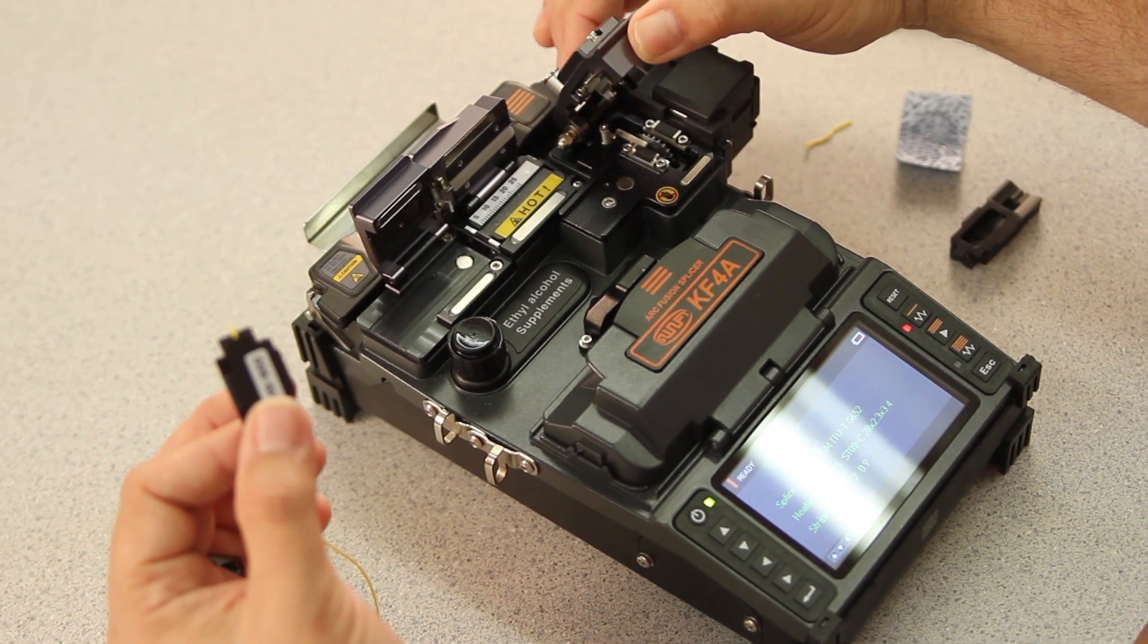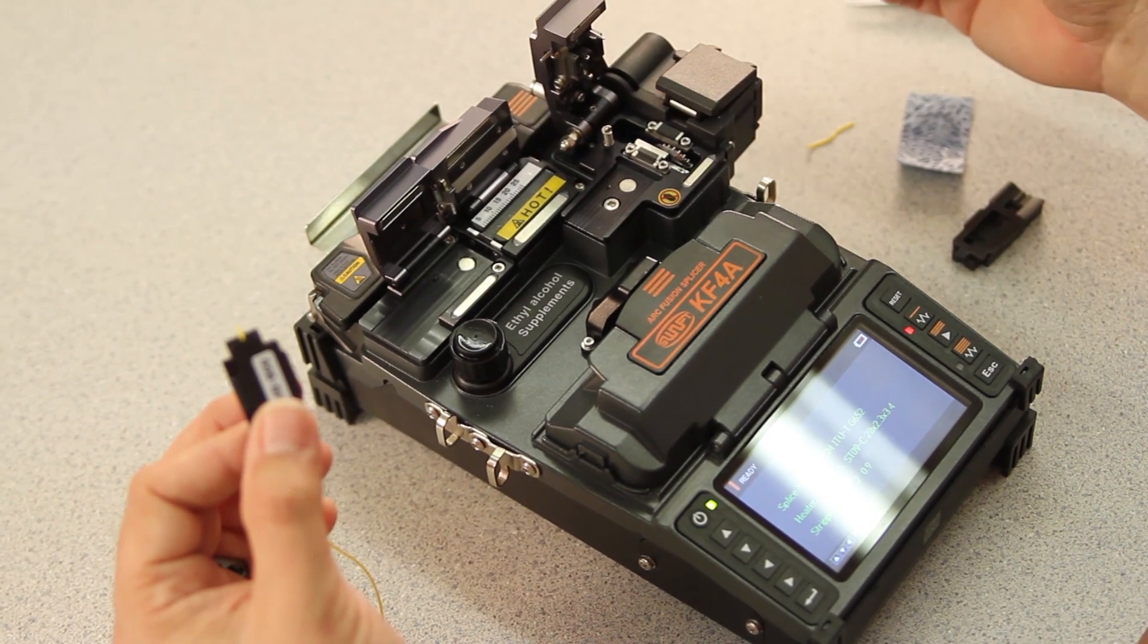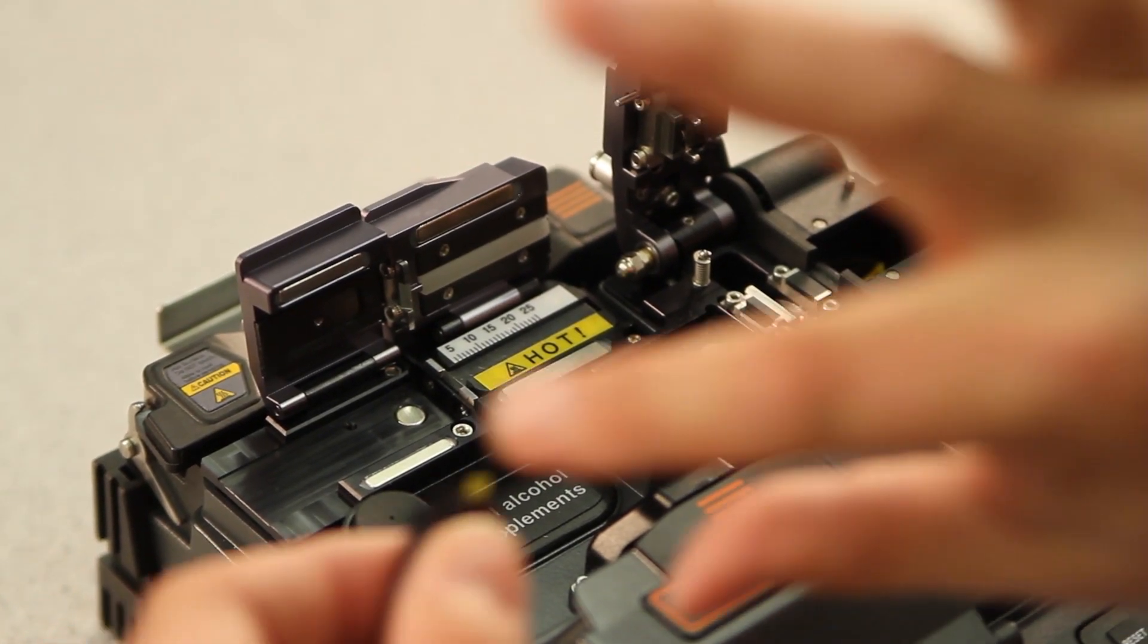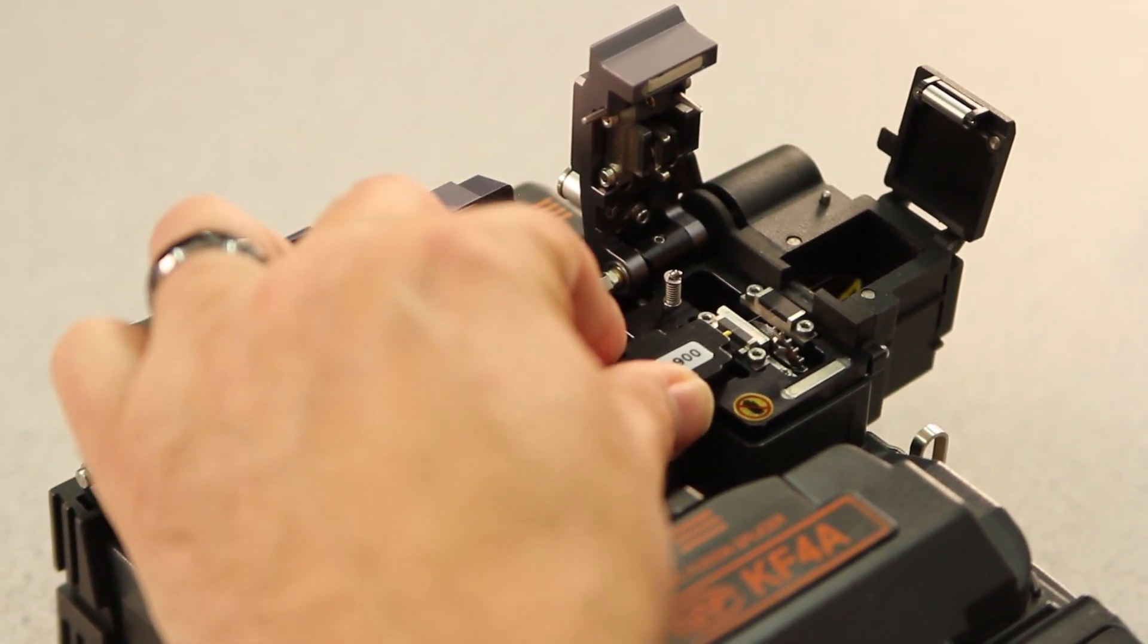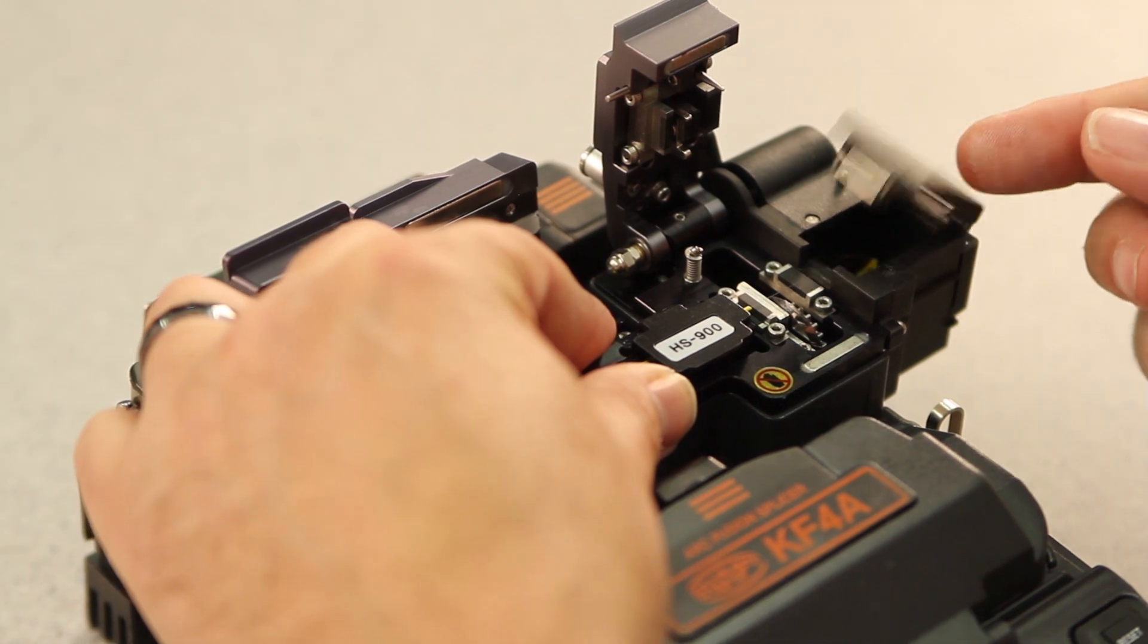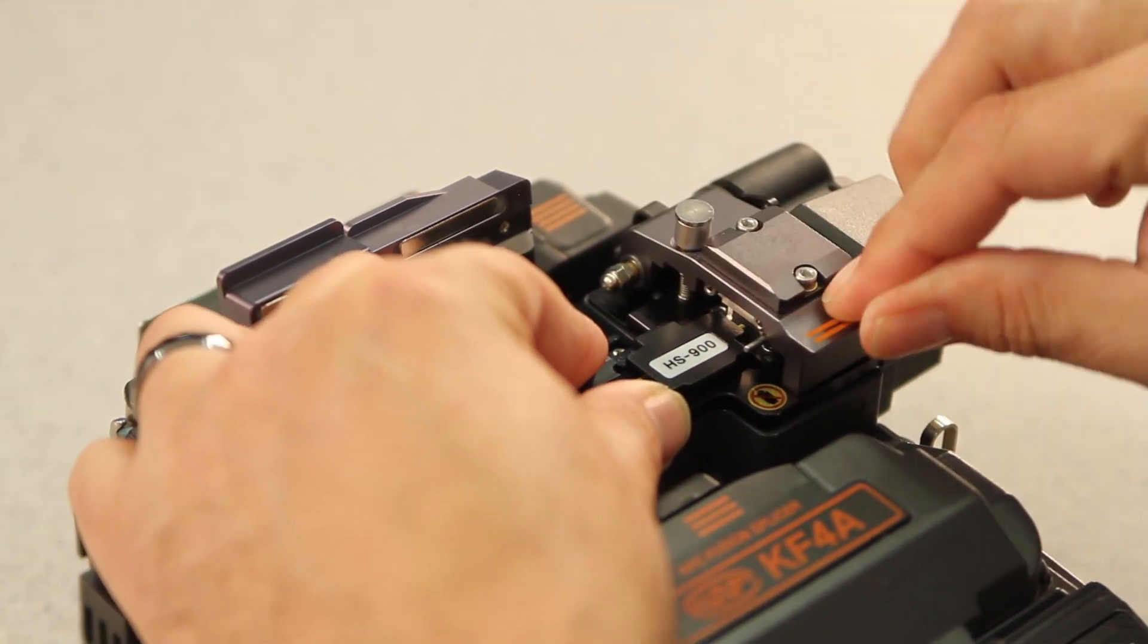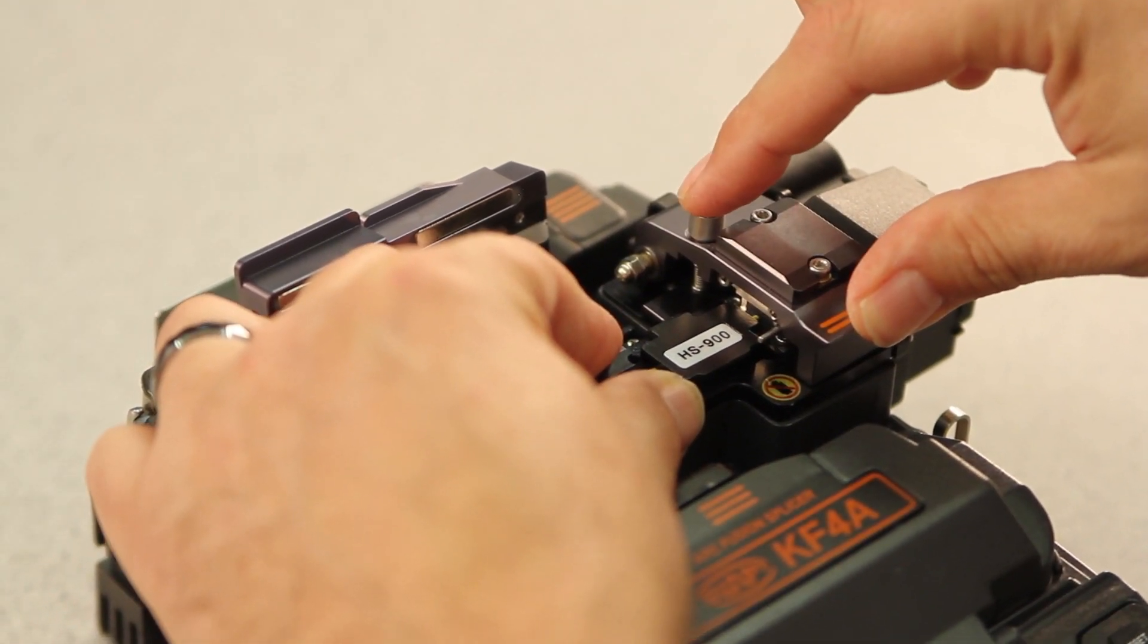Open your cleaver door until it's fully engaged, then your trash bin. Place your holder in the channel, making sure it's pushed fully forward. Close your trash bin, close your cleaver door, and depress the button.